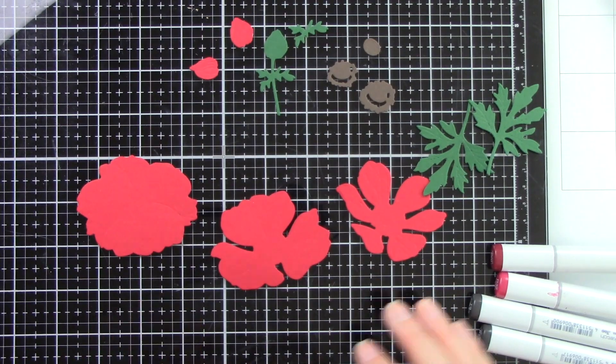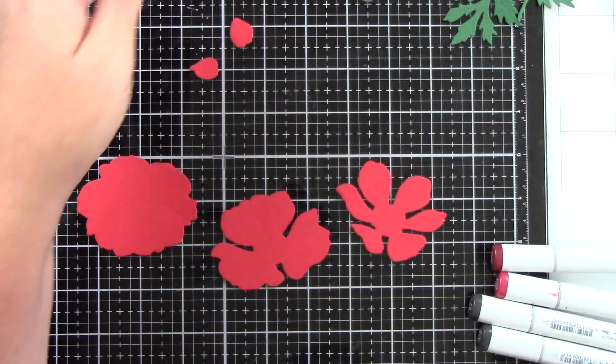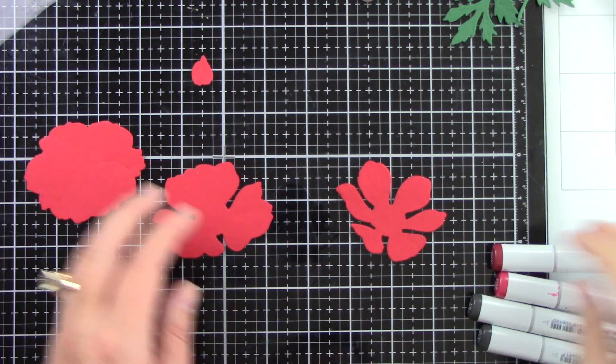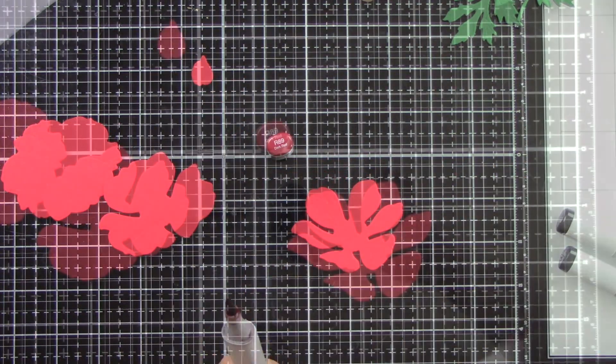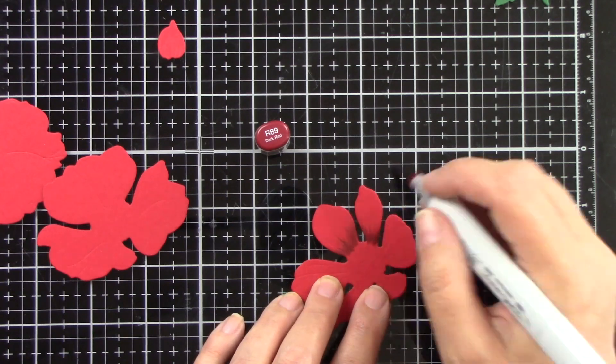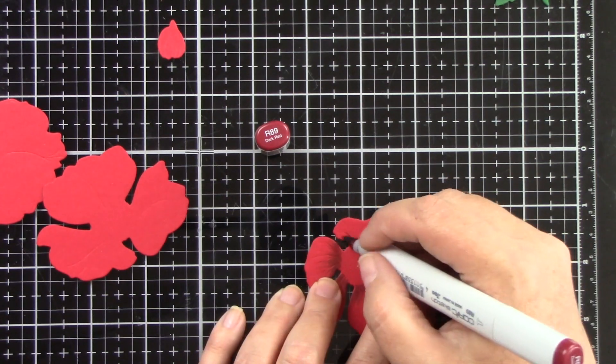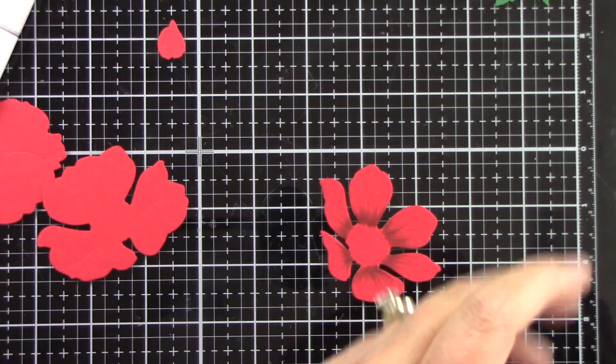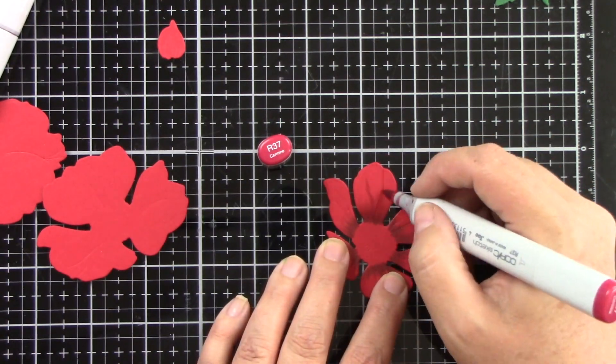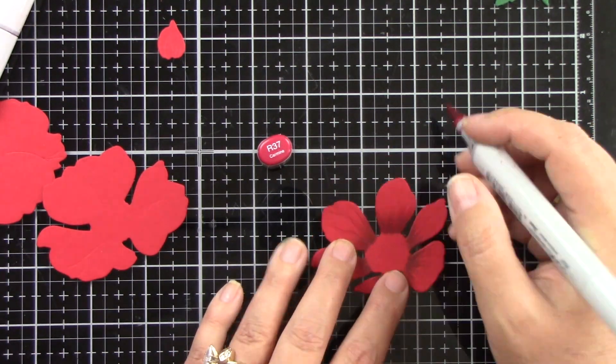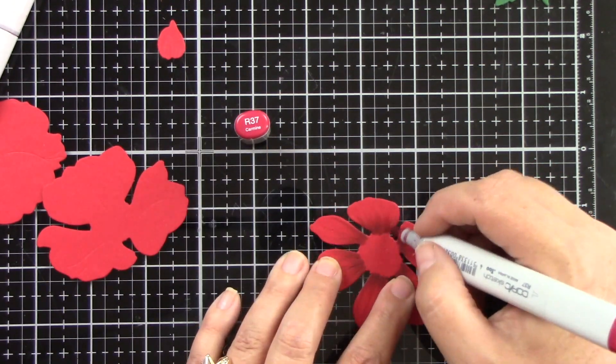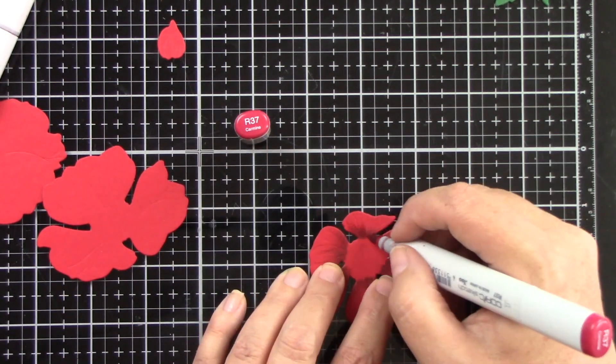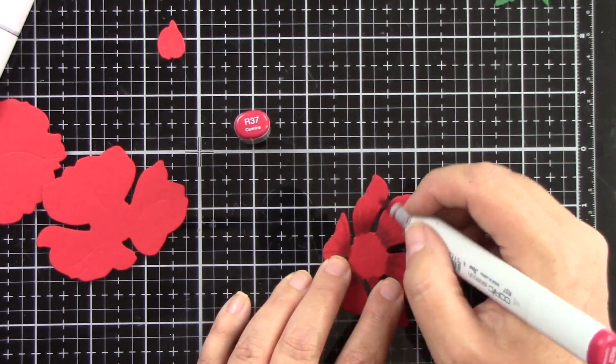Now I die cut these from all colored cardstock but I am going to add some detail with some copic markers. You could die cut this from white cardstock and color it completely with copic markers, or you can just die cut it from colored cardstock and not add any of this detail at all. But I'm coming in with R89 which is a really deep red and just from the bottom of the petal out, just flicking outwards but keeping it really towards the bottom because we just want that part to have some dark layers.